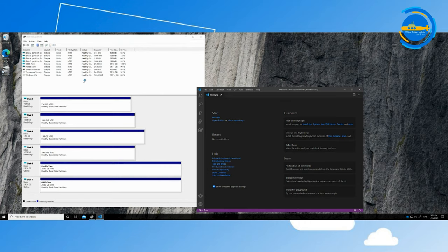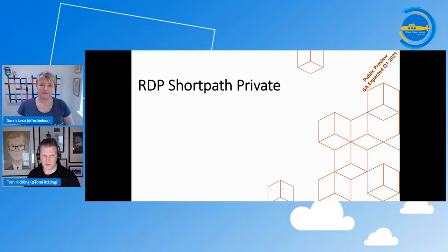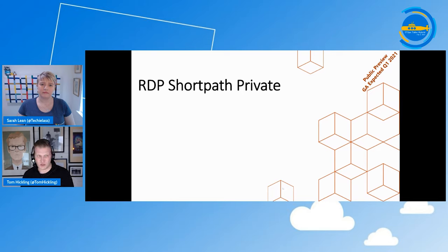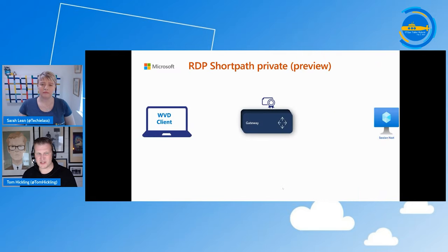Moving on to our second feature: RDP Short Path, also in public preview with GA expected within Q1 of 2021. RDP Short Path is a capability that started development before COVID and is designed to optimize user connectivity into WVD session hosts. It does this by using any managed network the customer has in place — such as ExpressRoute or a site-to-site VPN. To explain it, we need to look at normal connectivity first.